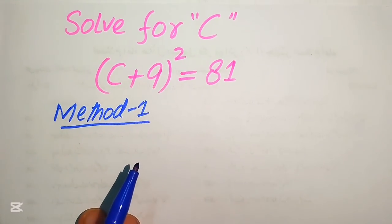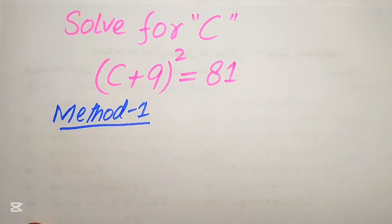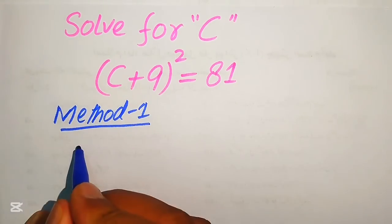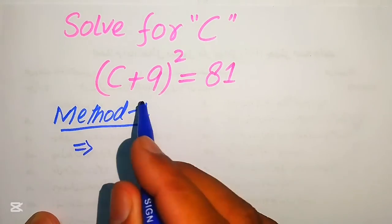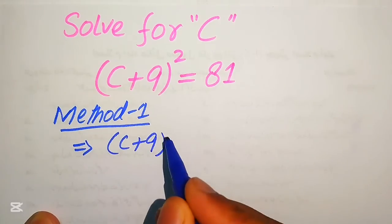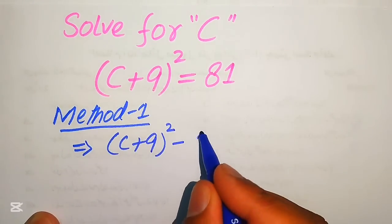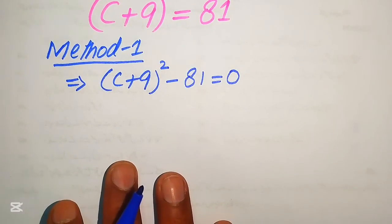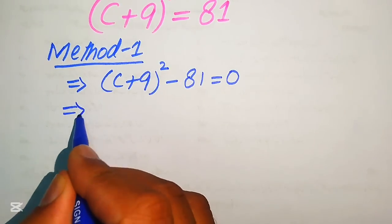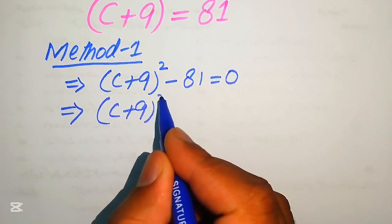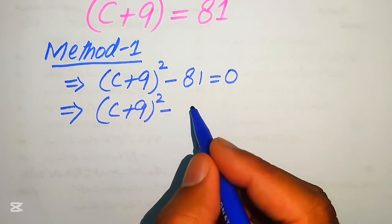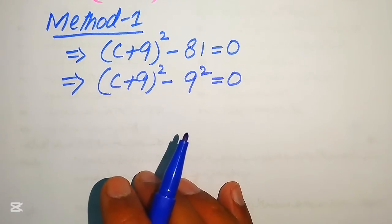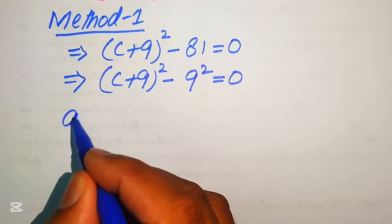First we move forward with method number 1. In this method we focus on the right hand side and move 81 to the left hand side, so it becomes (c + 9)² minus 81 equals 0. In the next step we rewrite this as (c + 9)² minus 9² equals 0.